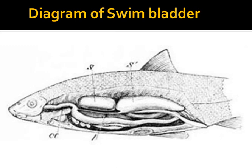The swim bladder varies greatly in structure, size, and shape. It is essentially a tough sac-like structure with an overlying capillary network. Beneath the capillary system is a connective tissue layer called the tunica externa, and below that lies the tunica interna, consisting primarily of smooth muscle fibers and epithelial gas gland. The swim bladder lies below the kidneys, between the gonads and above the gut. The connection with the esophagus may be retained throughout life or lost in the adult. The gas secreted is mostly oxygen and nitrogen, with a small quantity of carbon dioxide.